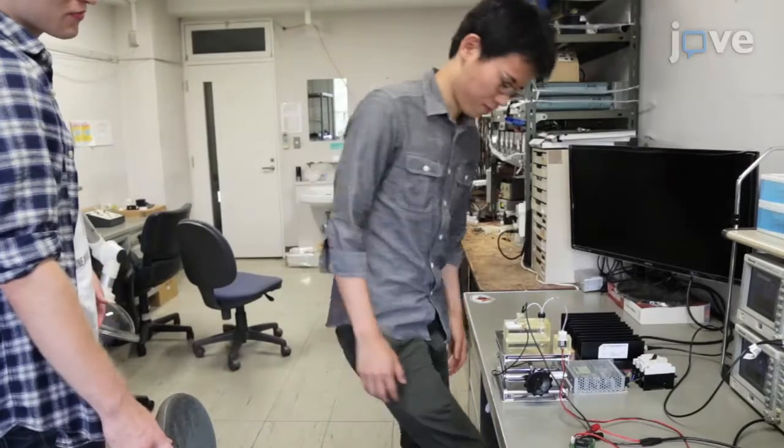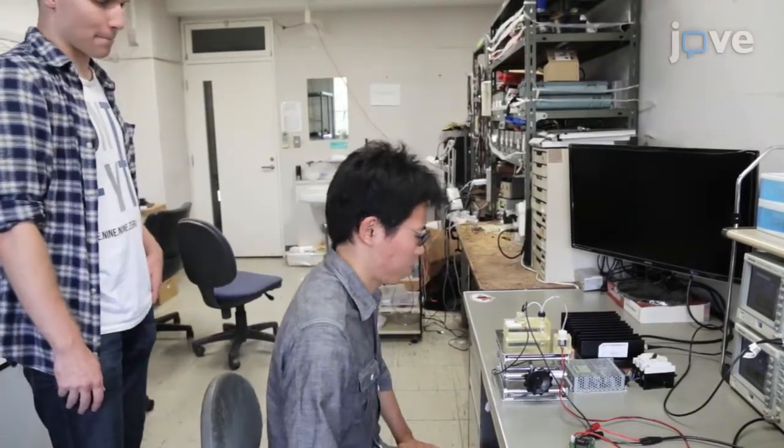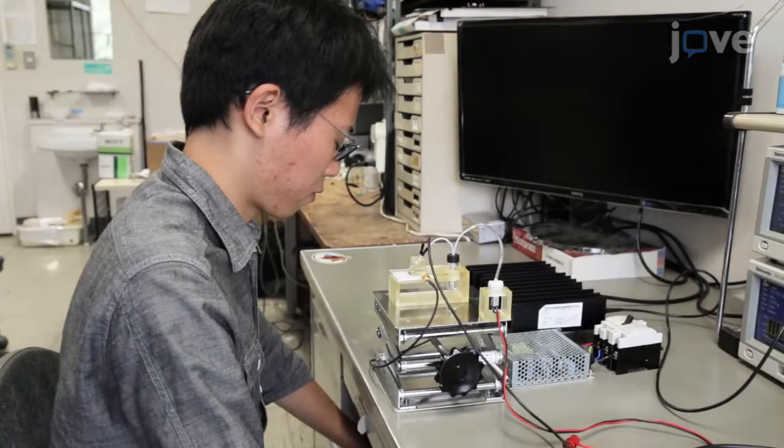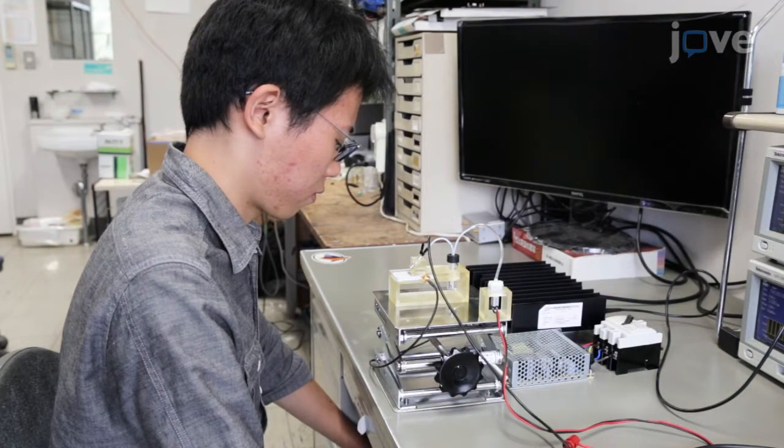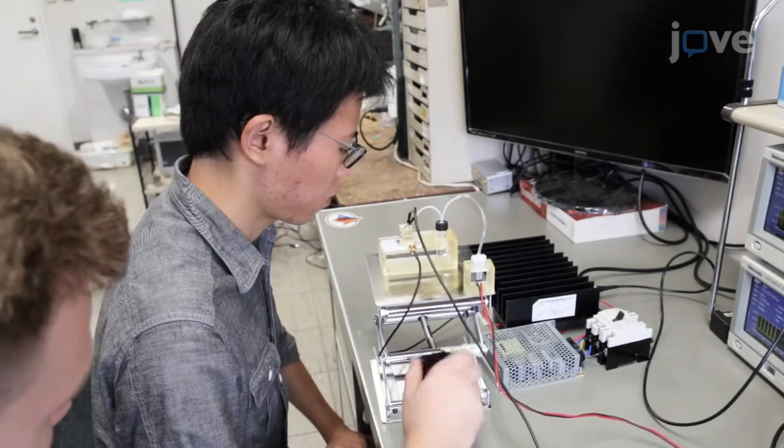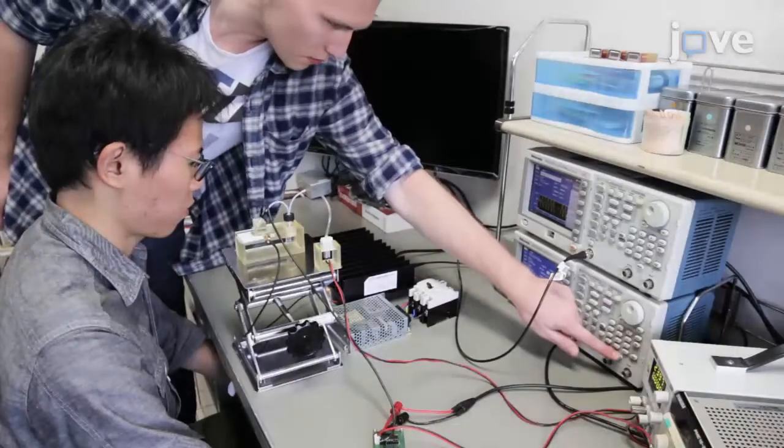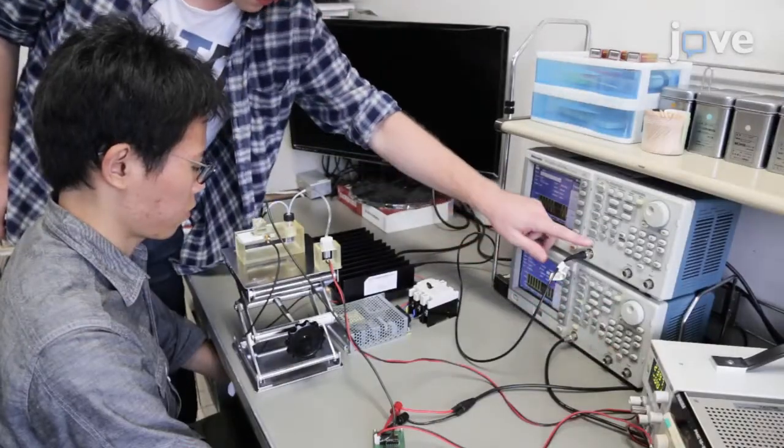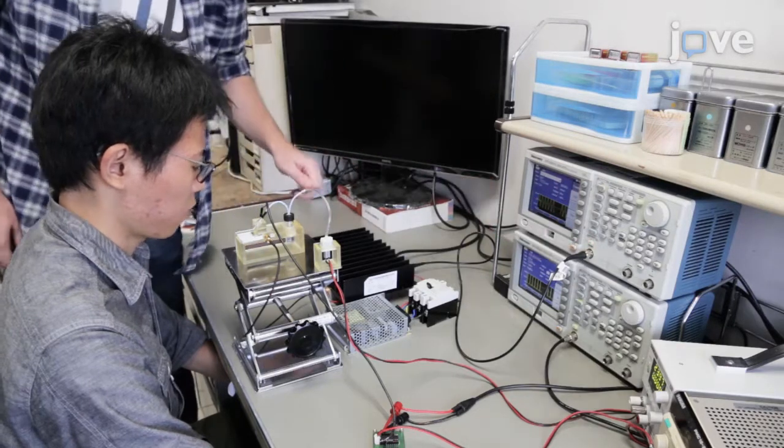Once the system is ready, recruit a person to detect scent. Have the person sit with his nose 20 to 30 centimeters in front of the atomization area. Adjust the height of the atomizer to the level of the participant's nose. Dispense the liquid onto the device and atomize it. Allow the participant to detect the scent.